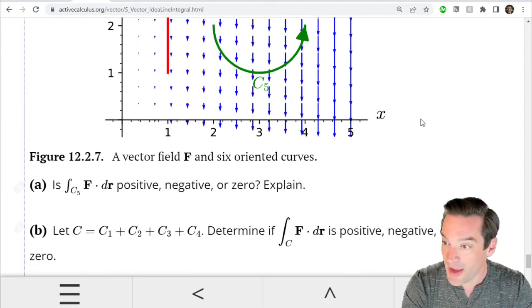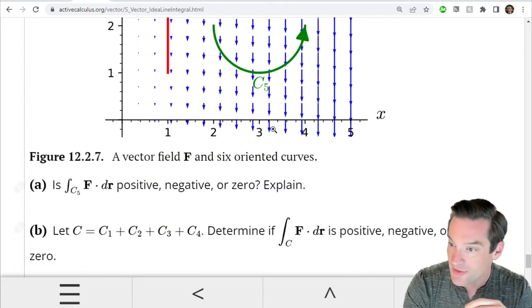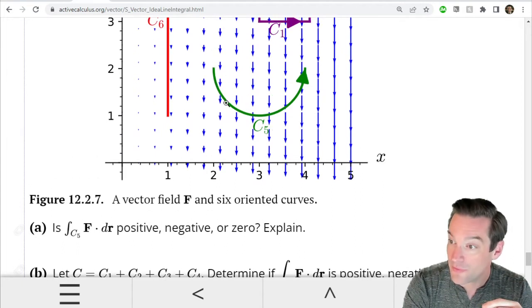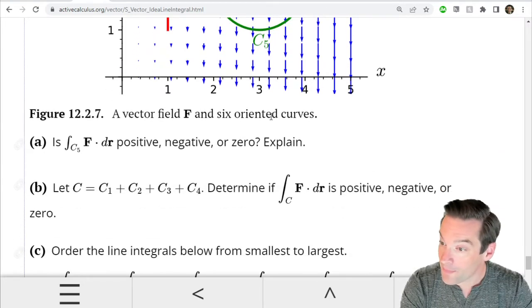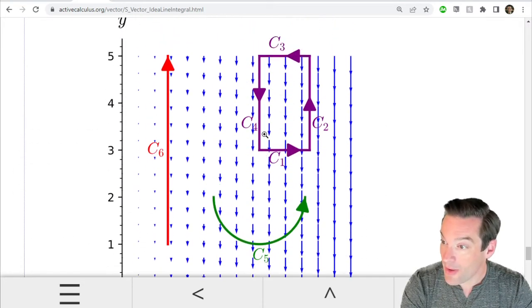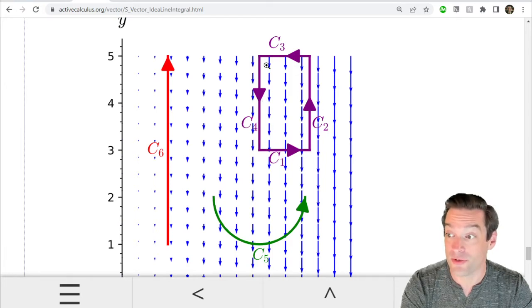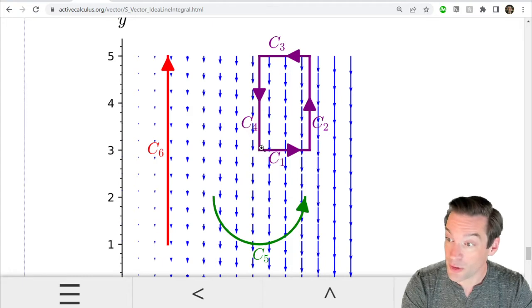And so once again the first task is going to be to think about whether one of these path integrals is positive, negative, or zero. That's the C5, the semicircular one. And then we want to start thinking about this complete circuit that we're taking over here: C1 followed by C2, followed by C3, followed by C4. So we're taking a complete loop.